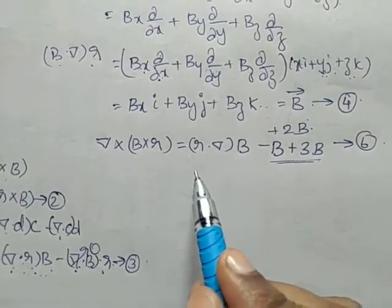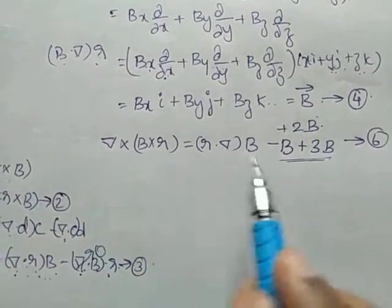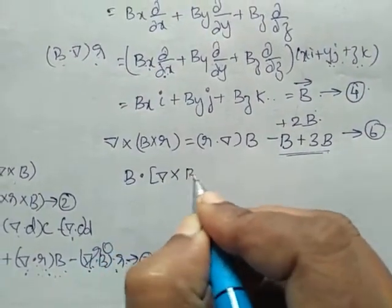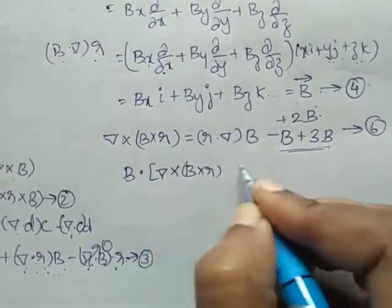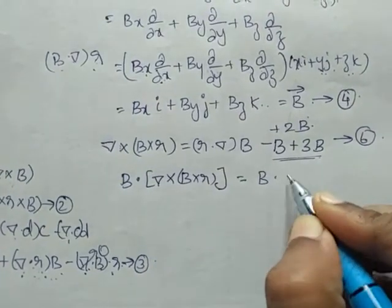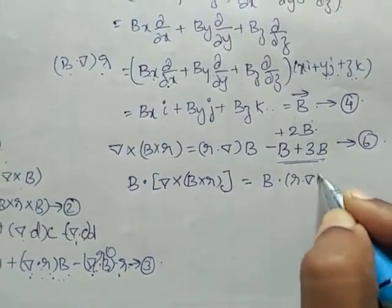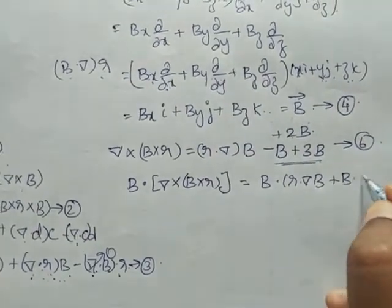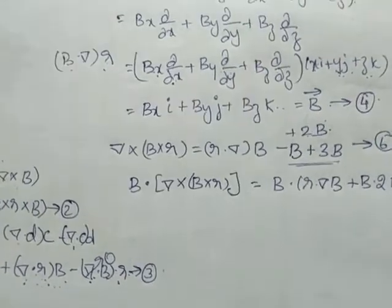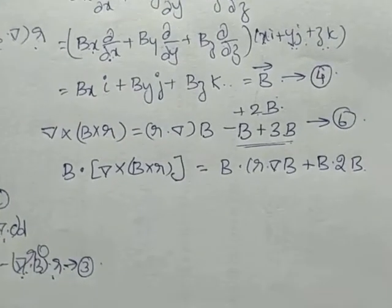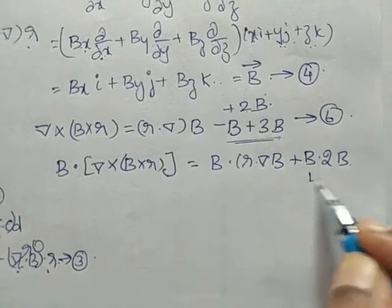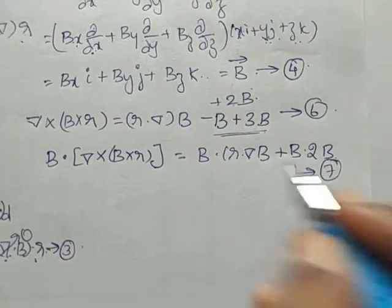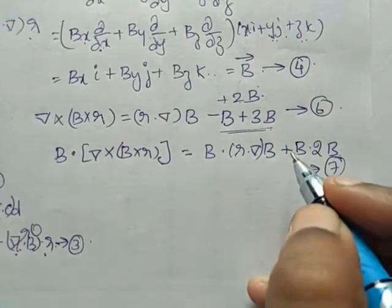We got the value of del × B × R. Now taking the dot product with B on both sides, we get B · (del × B × R) equals B · (R · del B) + B · 2B. This is equation 7.